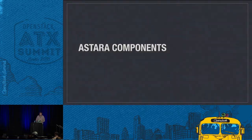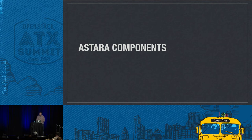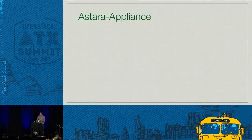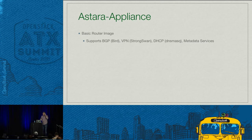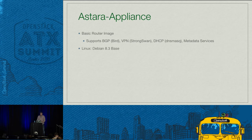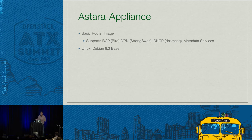Within the Astara project ecosystem, we have the orchestrator plus a couple of other component projects. We have Astara Horizon, which provides integration with Horizon. We have the Astara Appliance — while Astara itself is not in the data path, we needed something for testing to show how routing as a service works. The Astara Appliance is a basic router image supporting BGP based on BIRD, VPN, DHCP, and metadata services similar to what you'd find in the Neutron version. It's Linux — Debian 8.3 — and pretty simple to build using disk-image-builder, re-leveraging community components.